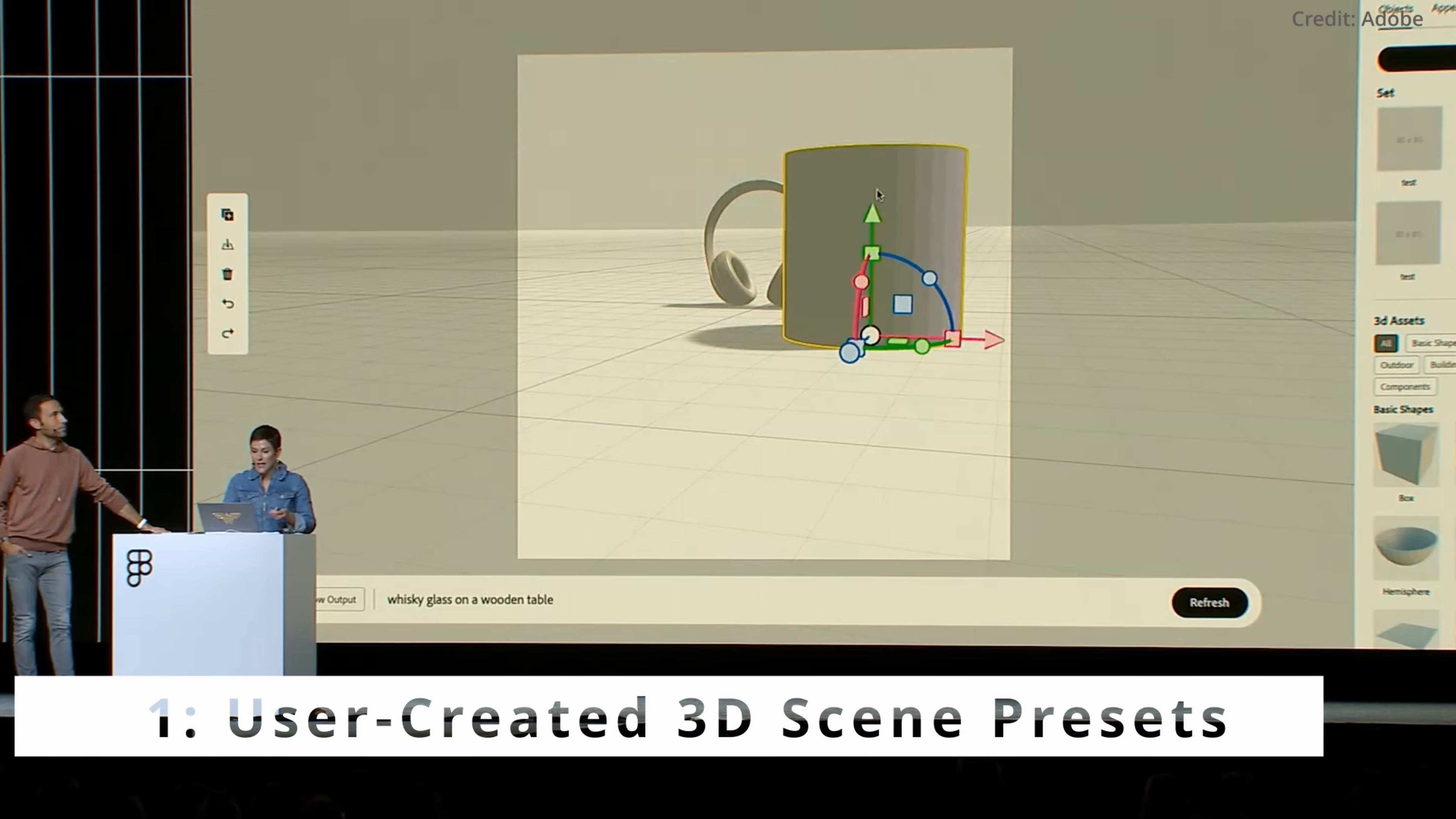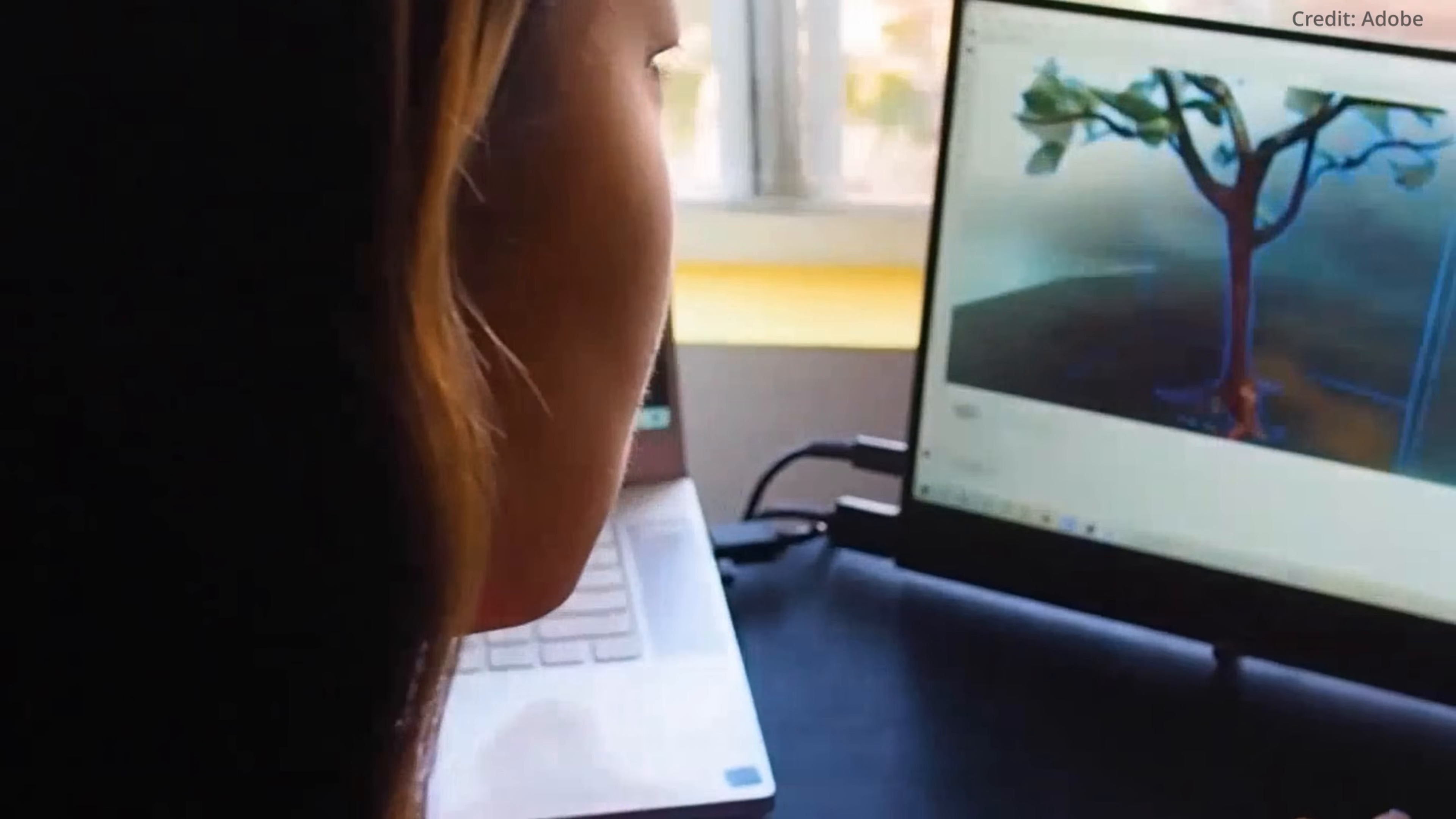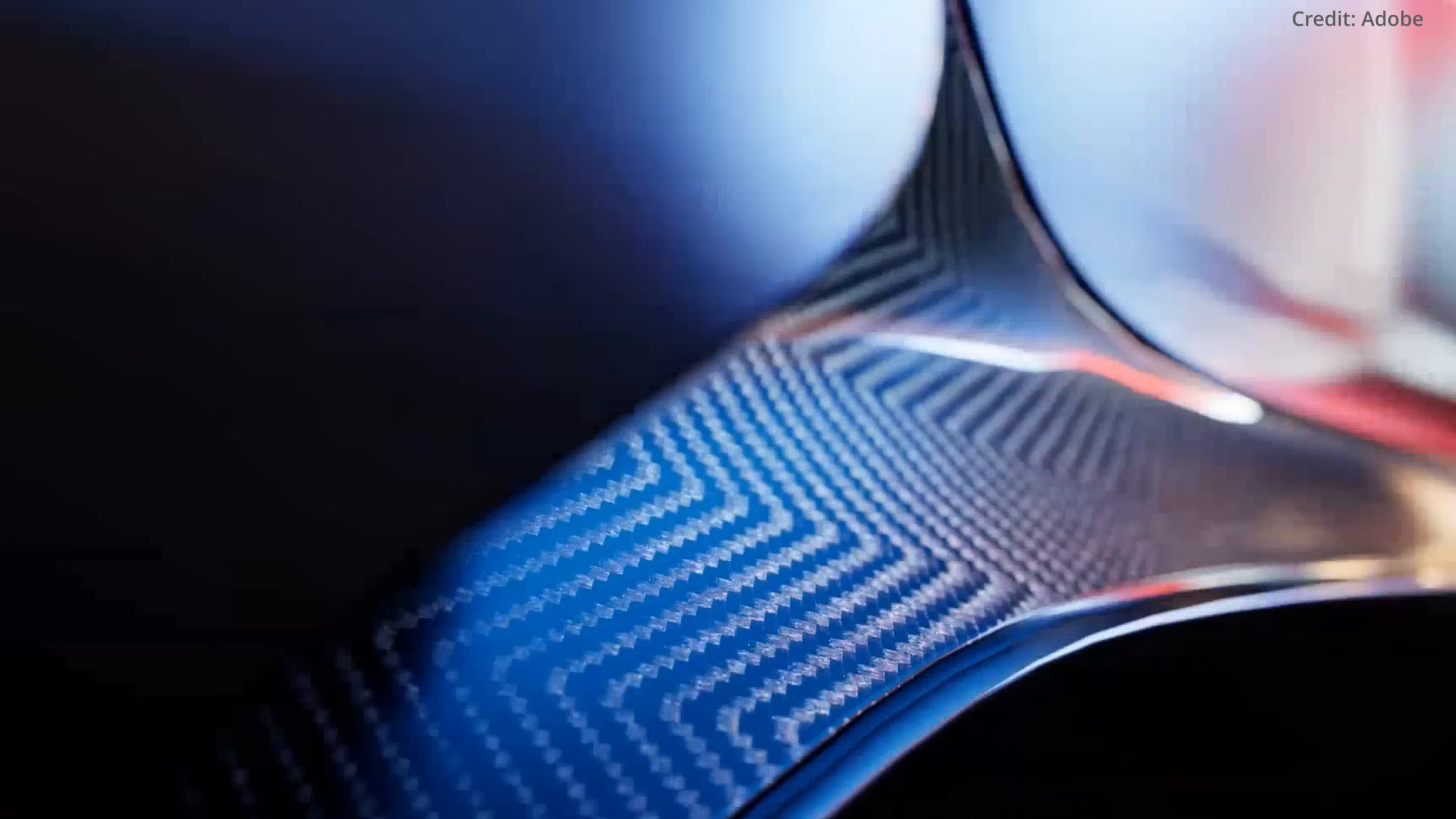Number one, user-created 3D scene presets. At the crux of Project Gingerbread's groundbreaking AI suite is the ability to use user-created 3D scene defaults for image generation. Unlike the standard AI procedure of random composition, Gingerbread layers the generated image atop these defaults, providing a dynamic level of control for designers. It's akin to having a skilled artist at your fingertips, ready to create based on your directions. This feature is not just an upgrade, it's a revolutionary shift in AI-assisted image creation.